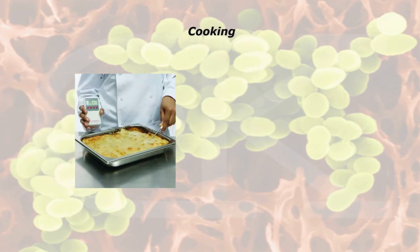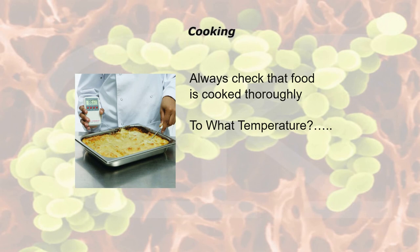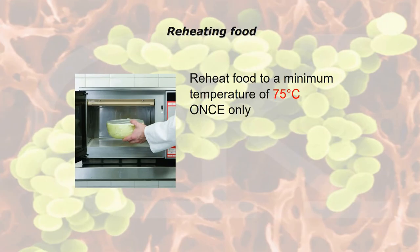Always ensure food is cooked thoroughly to 75 degrees C — for the sake of the exam. When reheating food, only reheat it once, to a minimum temperature of 75 degrees C — the same as the cooking temperature. For example, a steak and kidney pie kept above 63 degrees C, with one portion left over, chilled down, taken out the next day, and reheated in a microwave or regeneration oven should reach an internal core temperature of 75 degrees C.